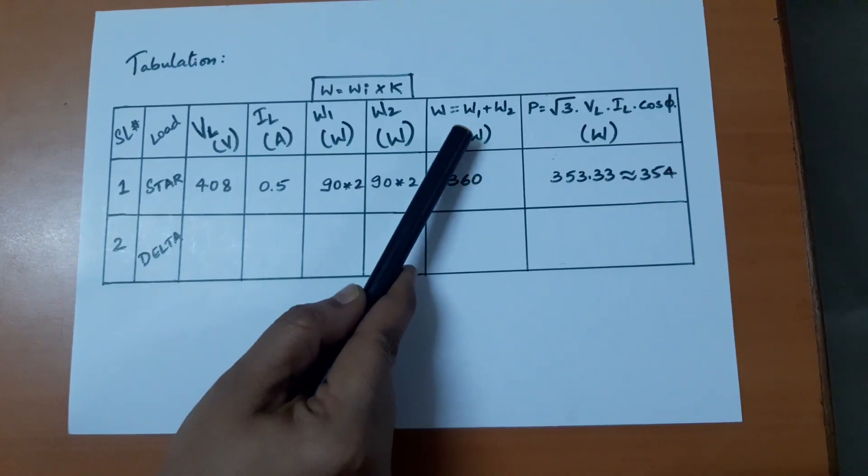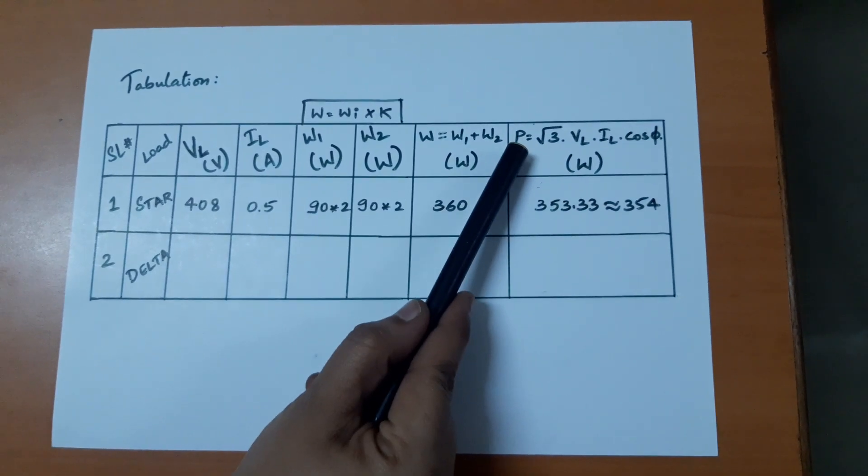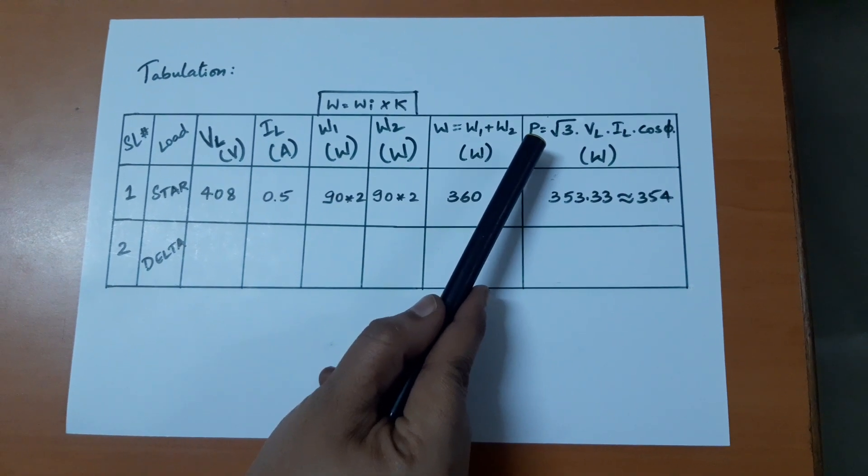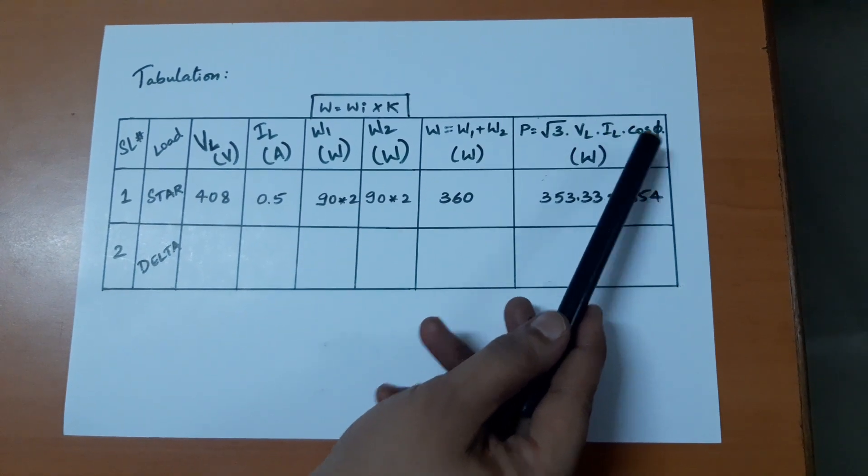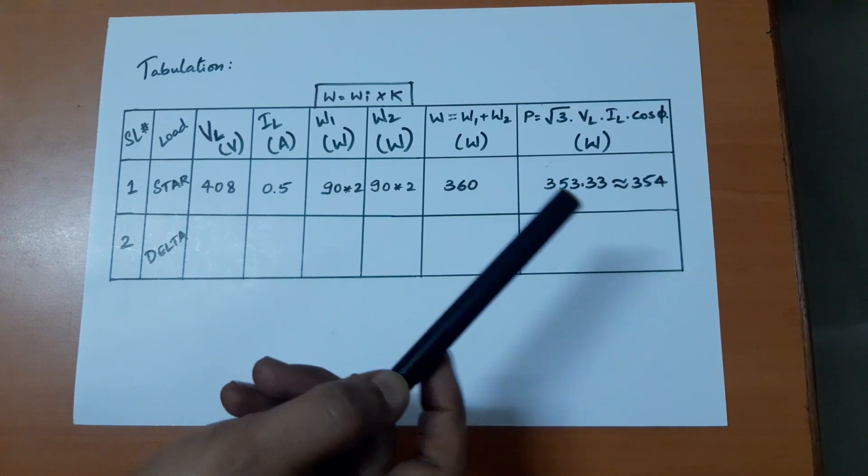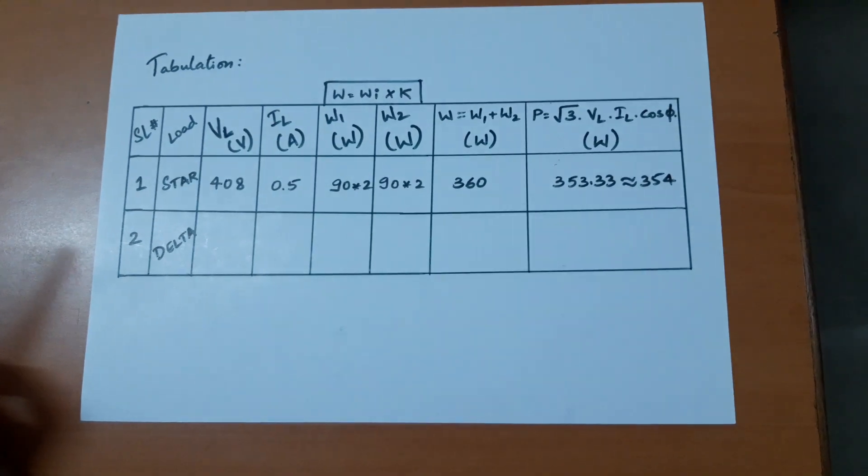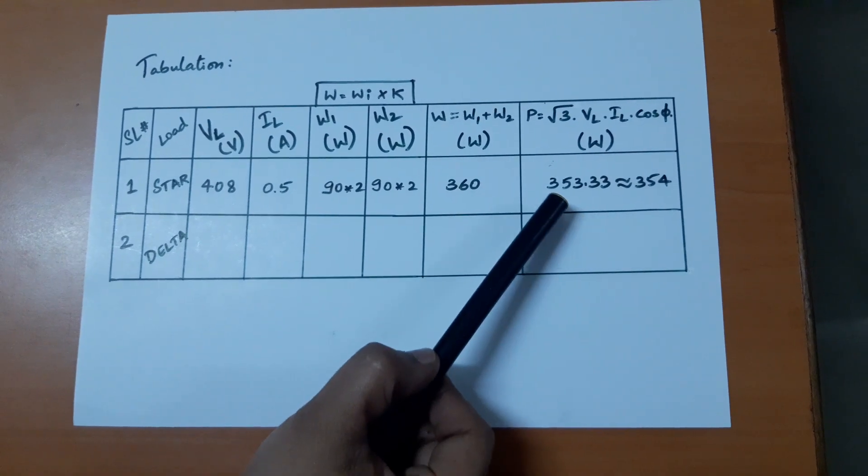The value of W, which is the sum of W1 and W2, is calculated. The value of P, the theoretical formula for calculating 3 phase power, is given as root 3 VL IL cos phi. We know the value of VL, IL, and cos phi, which is always 1 for this UPF type wattmeter. So take the reading...